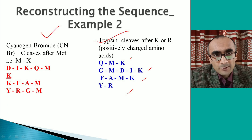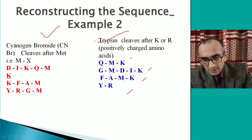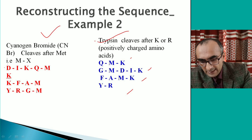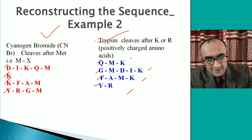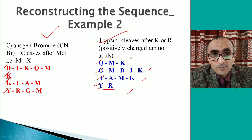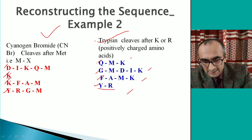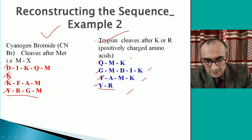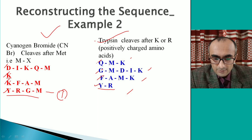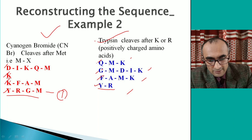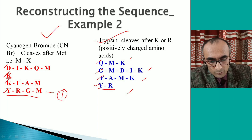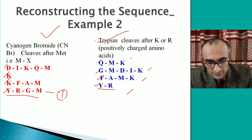Looking at the N-terminal amino acids: the CNBr set has D, K, K, Y and the trypsin set has Q, G, F, Y. The Y-containing peptide at the N-terminal is common to both sets, so the Y-containing peptide is the first fragment from the N-terminal side — and that is YRGM. On the C-terminal side, comparing both sets, lysine (K) is common, so the free K would be the fourth fragment.